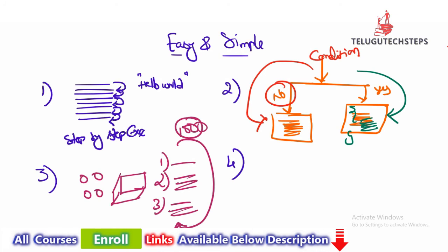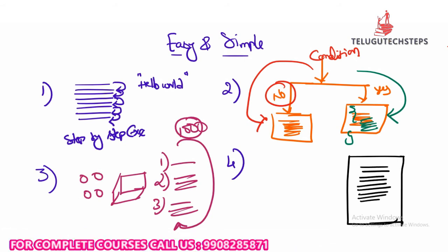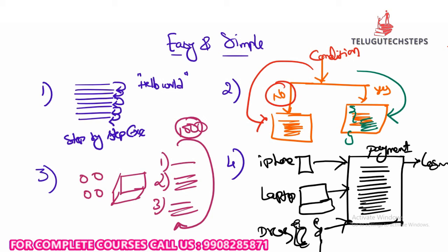The fourth step is functions. Functions are a block of code that is very important. For example, you have a payment file — whether you have an iPhone, a laptop, or a mobile smartphone, you call the same payment function. Instead of writing the same payment code for each customer, you write it once as a function and call it whenever needed. The four modules — step-by-step execution, conditional coding, looping, and functions — are really important.